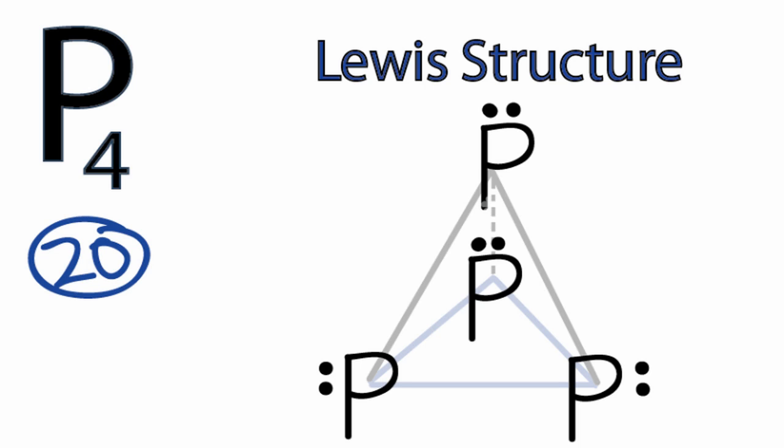There are three bonds — six valence electrons from bonding — and then the two lone pair electrons we've just added. So all of the atoms have octets, and we've used all 20 valence electrons. That's it — that's the Lewis structure for P4.